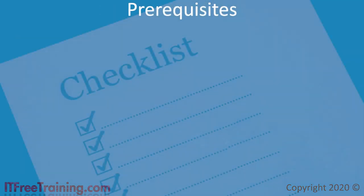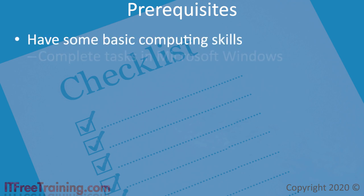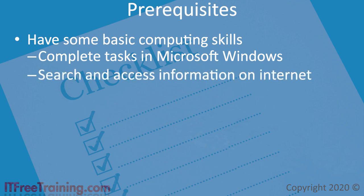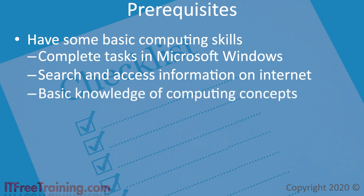There are some basic prerequisites CompTIA recommends before starting this course. First, have some basic computing skills — be able to complete basic tasks in Microsoft Windows. Next, be able to search and access information on the internet; using Google and accessing sites like internet banking is enough. Also, have a basic understanding of computing concepts: how to switch a computer on, log in, use the mouse, and run some applications.